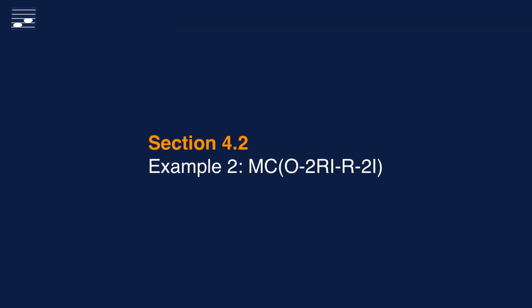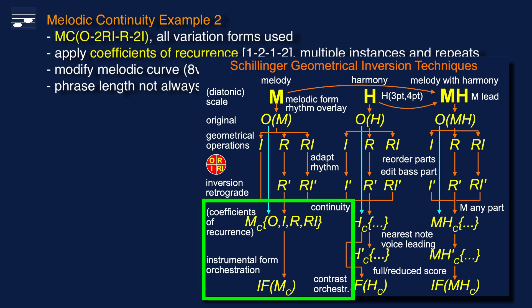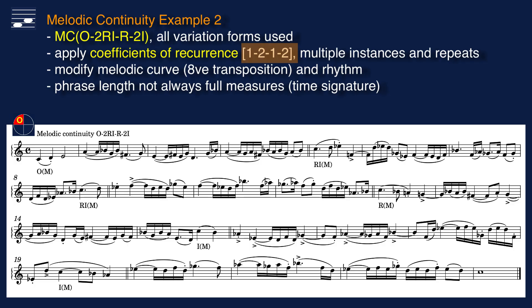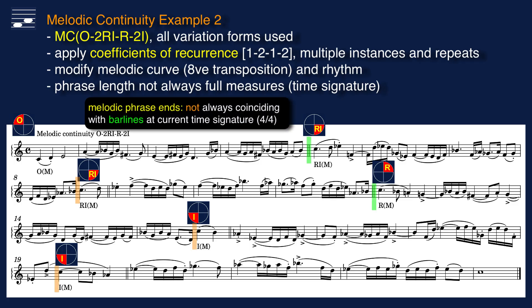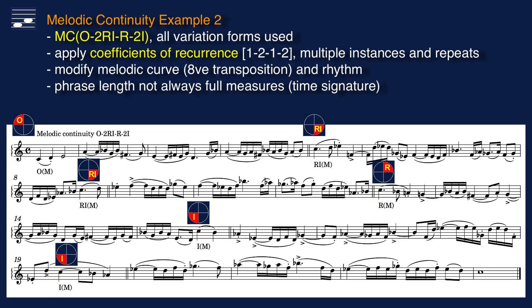The second example is more extended, with six melody statements. Now all four geometrical inversion variations are used. Also implement the Schillinger theory of rhythm concept of coefficients of recurrence — here 1, 2, 1, 2 — to obtain a chain of single and multiple instances of melodic form statements. The result is an extended, longer example. The end of a melodic subphrase need not necessarily coincide with a barline at the current time signature; this is reflected in the orchestration — see measures 8, 15, and 19. It is a consequence of the chosen rhythmic pattern overlay and the time signature, or by design. This is yet another degree of freedom to disguise the series of melodic forms and create irregular phrase length. We have obtained a unique long melody line based on an original theme, with an overlap of 1 to 3 notes when a new instrument enters.